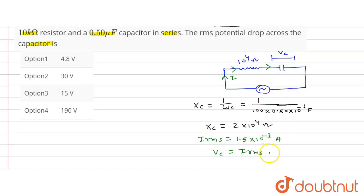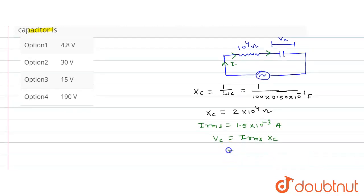Now put the value: 1.5 into 10 to the power minus 3 into XC value is 2 into 10 to the power 4. So from here this will be 3 into 10, that is equal to 30 volt. So VC value is 30 volt. So option second is the correct option. Thank you.